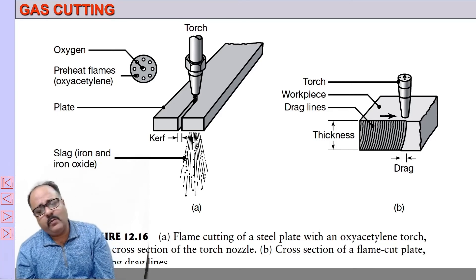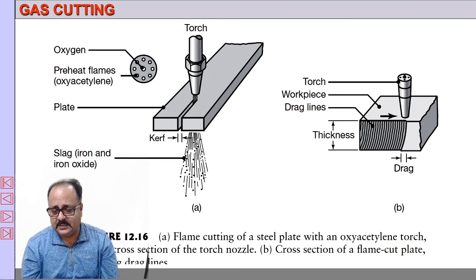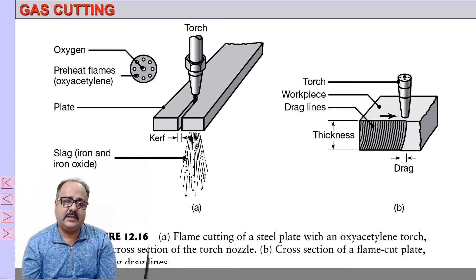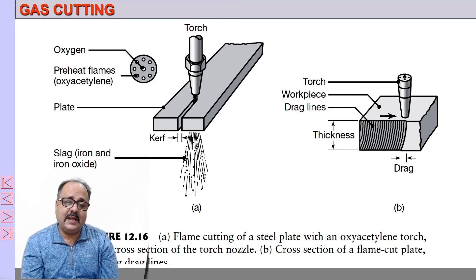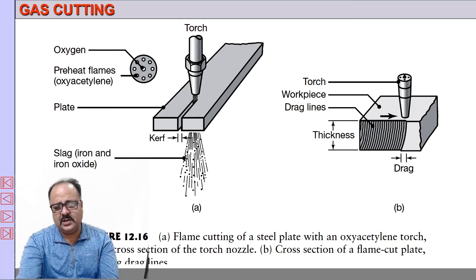No matter how carefully it is done, the cutting surface has a very poor surface finish. Nowadays, many other cutting options are available. Earlier, gas cutting was a very popular method, but now we have plasma cutting, wire EDM, laser beam cutting, and water jet cutting. Therefore, industrial dependence on this type of process is much less today, and it does not give a very good surface finish.